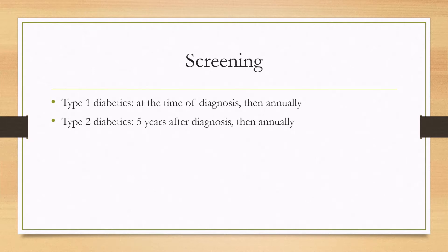When do you look for it? In type 1 diabetics, you start looking for it at the time of diagnosis and then annually. In type 2 diabetics, you start screening 5 years after diagnosis and then annually after that.